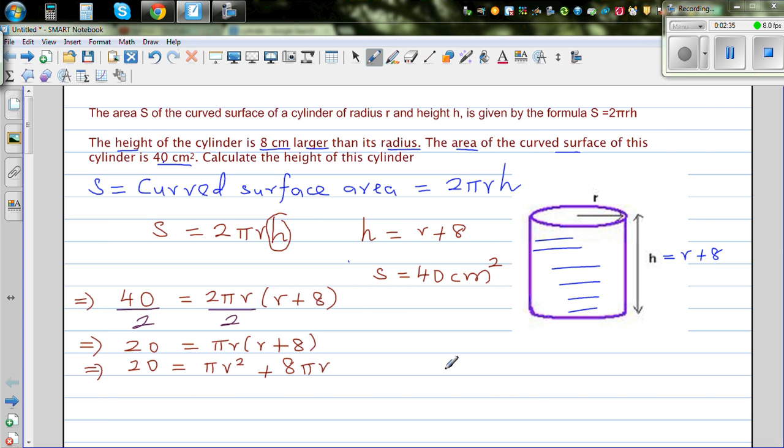So this has become a quadratic equation. Writing this in quadratic form, you can write πr² plus 8πr minus 20 equals 0. What I've done is basically taken away 20 from both sides. And from this you can get this quadratic equation.